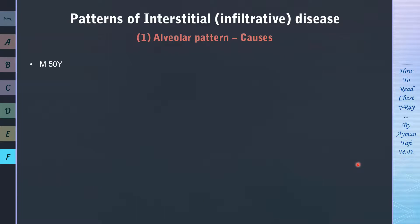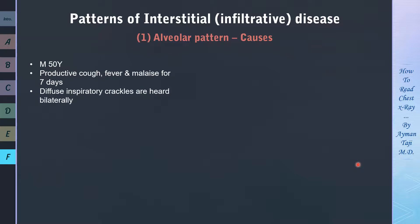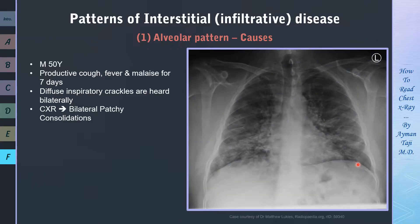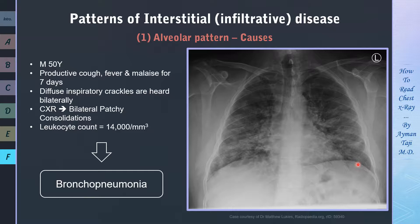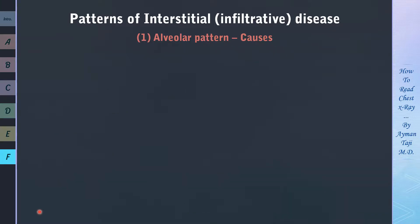A 50-year-old woman presents with productive cough, fever, and malaise that started 7 days ago. On examination, diffuse inspiratory crackles are heard bilaterally. Her CXR shows diffuse bilateral patchy consolidation, and her leukocyte count is 14,000. These findings are typical for bronchopneumonia, which shows poorly defined patchy infiltrates scattered throughout the lungs on CXR.